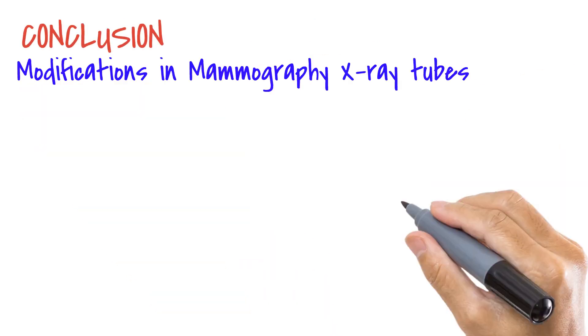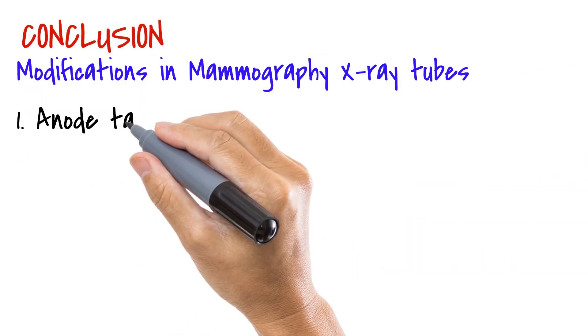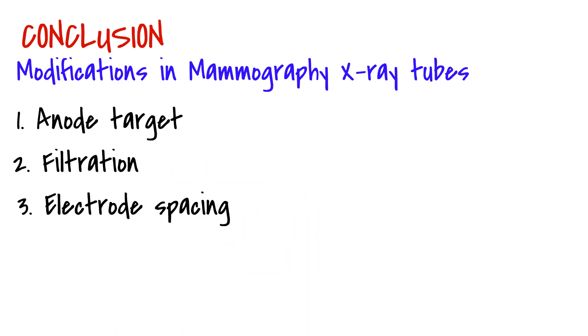In conclusion, the major modifications in mammography tubes are in the anode target, filtration, and electrode spacing. In the next video, we wrap this all up. Don't forget to like, subscribe, and share.